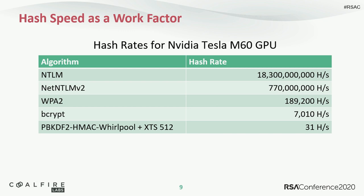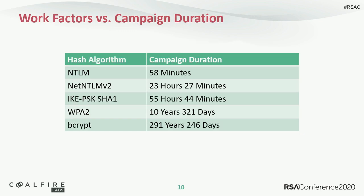This makes a big impact on the success rate of a hash cracking campaign. If you have a massive word list, tons of rule files, or you're brute-forcing using a mask, and you've got four quintillion guesses to try, it's a lot better to do that at 18.3 billion guesses per second than at 31. If we were to brute force the entire eight-character key space for NTLM, we're done in less than an hour. Kind of a big deal.